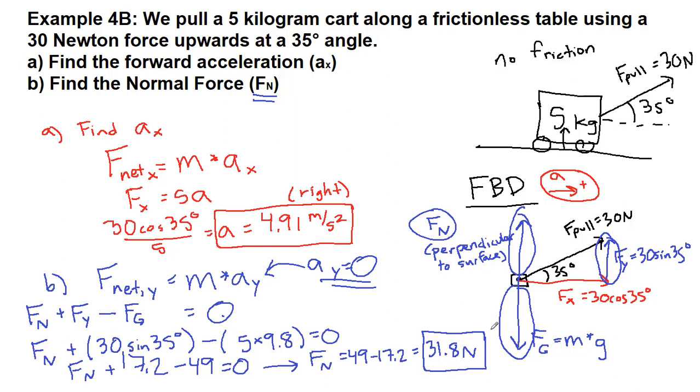To check that our number makes sense, the normal force here is less than the force of gravity because we're helping lift the cart a little bit off the table with our upwards pull force. In a couple of examples we will see a downwards push force where we're actually pushing the cart further into the table, and the normal force becomes a larger number than gravity normally is. So we never want to assume anything specific about it. We just want to take the situation that we're given and figure out what's going on. So we will see plenty more examples in chapter four. I will see you in those next videos.